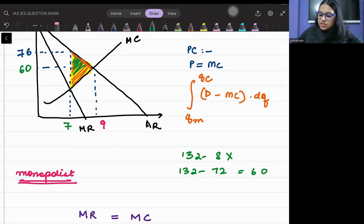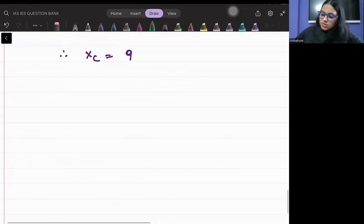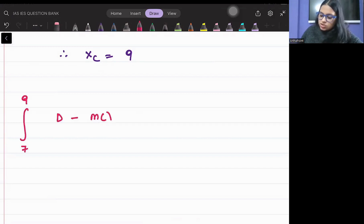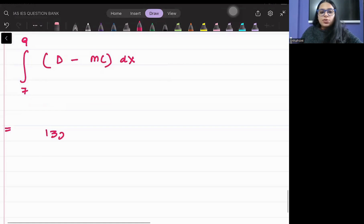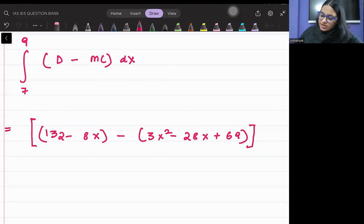Now I need to find this area. So let's integrate between 7 to 9. So now you have to integrate between 7 to 9 demand curve minus marginal cost curve DX. So demand equation 132 minus 8X minus cost curve equation 3X square minus 28X plus 16. I need to integrate this between 7 to 9 DX.